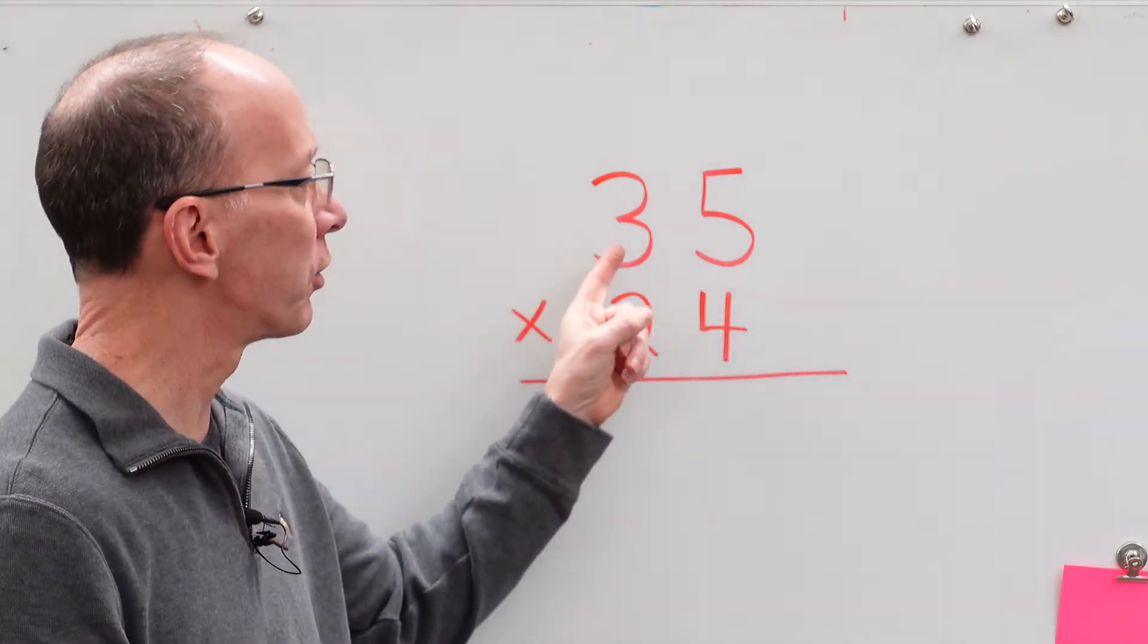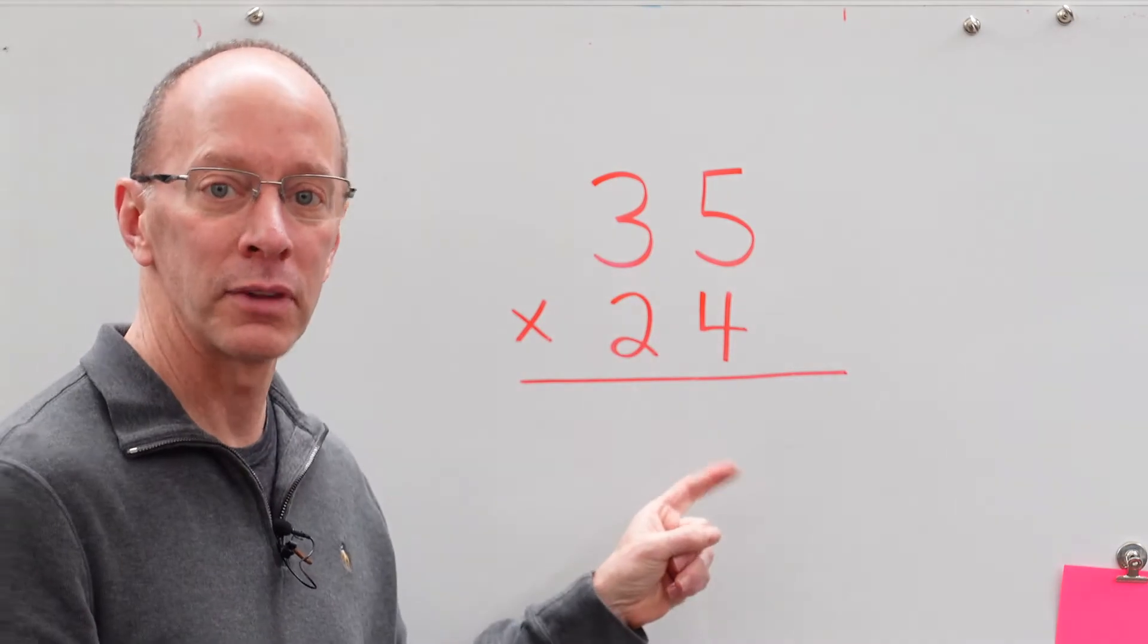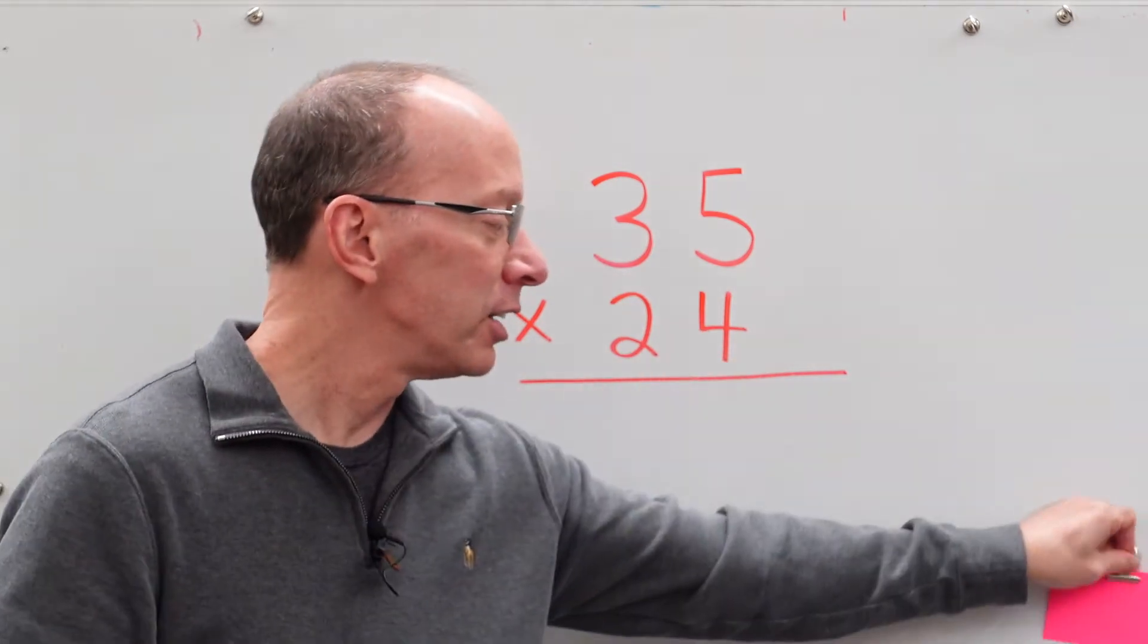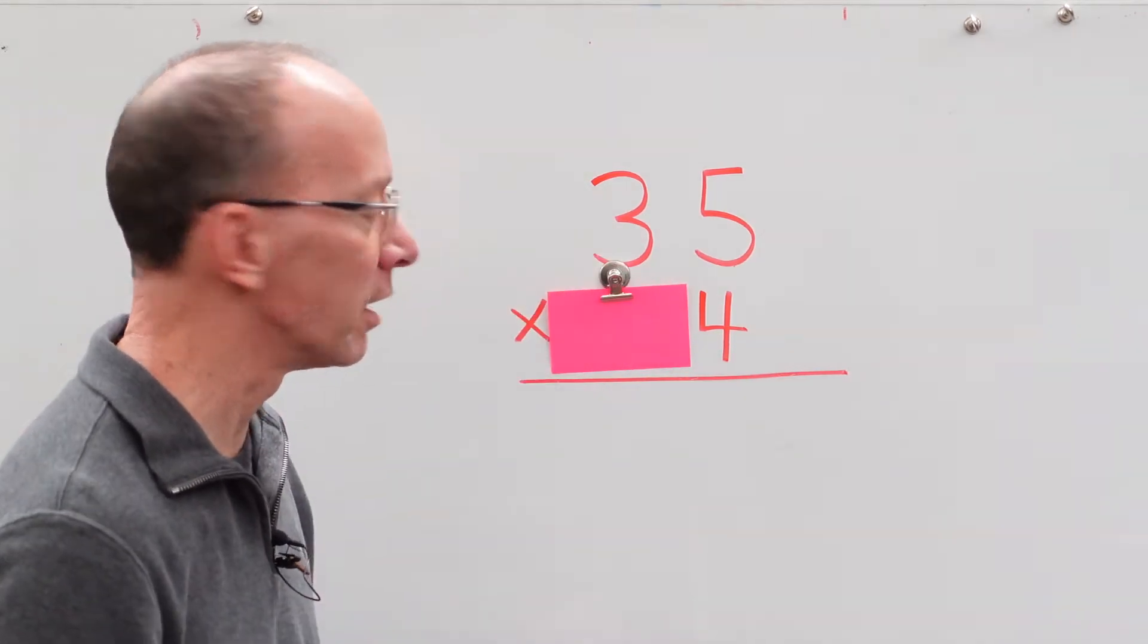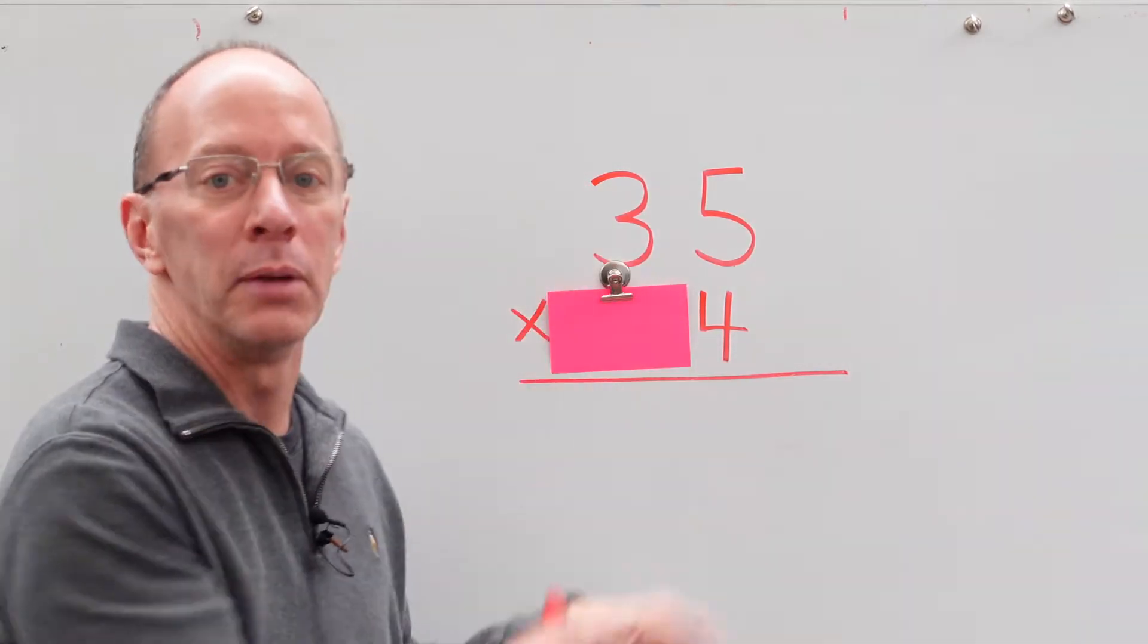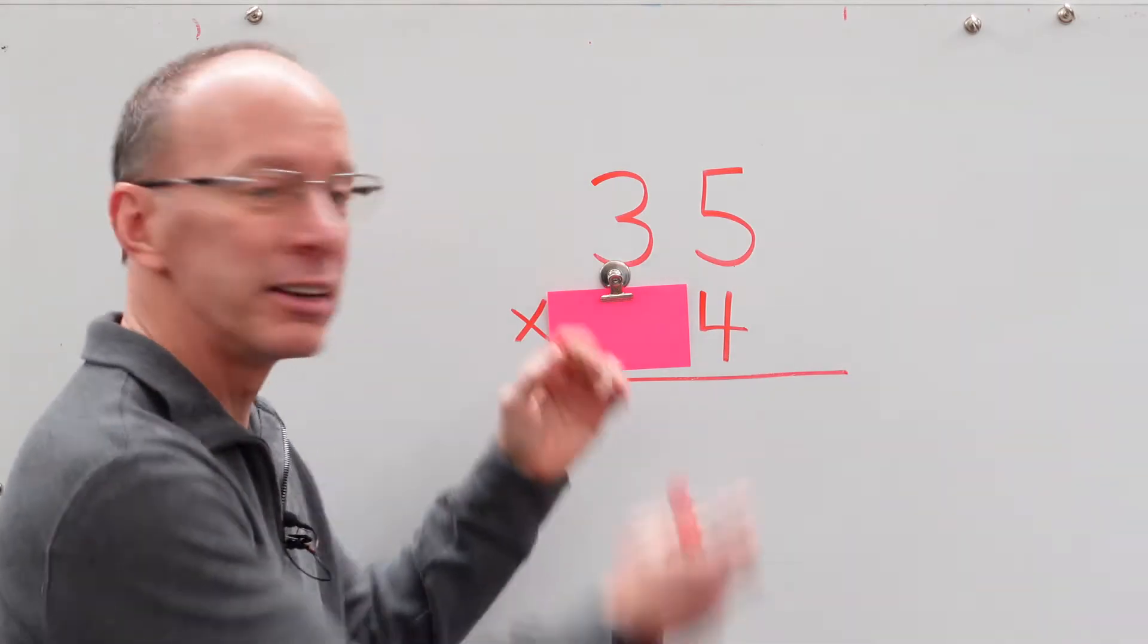First of all, we know how to do 35 times 4. All right, so let's start with that. You can take a card or a piece of paper and just cover up that number right there. That gets that out of the way, makes you feel more comfortable, and then we can get to work.